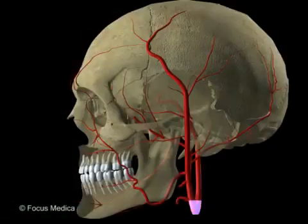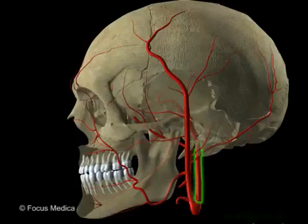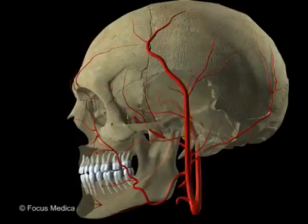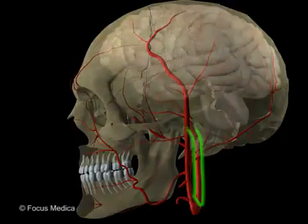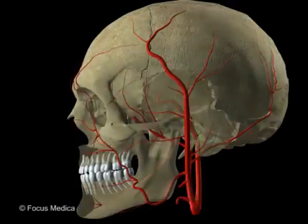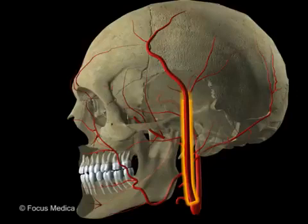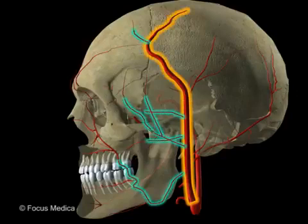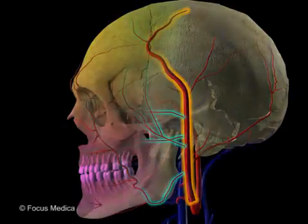The common carotid artery ascends in the neck and divides into internal and external carotid arteries. The internal carotid reaches the cranial cavity without giving any branches to the face. The external carotid gives several named branches, which supply the superficial and deep parts of the face and neck.